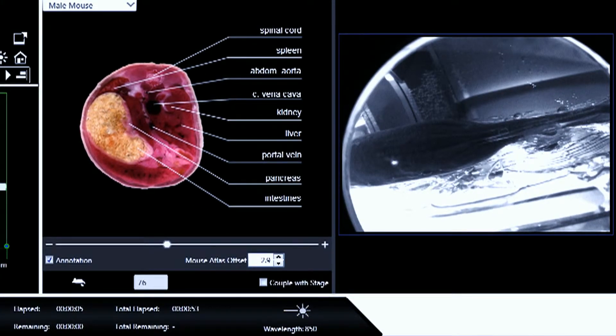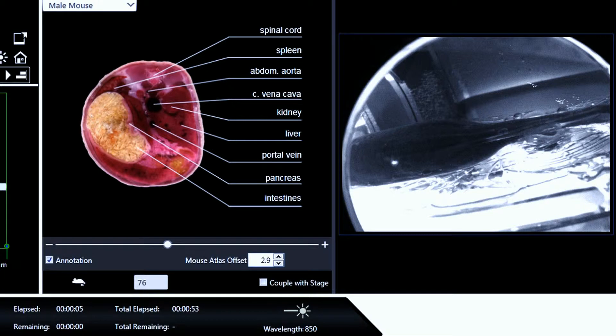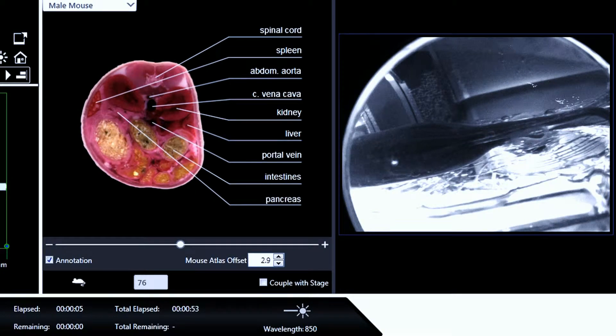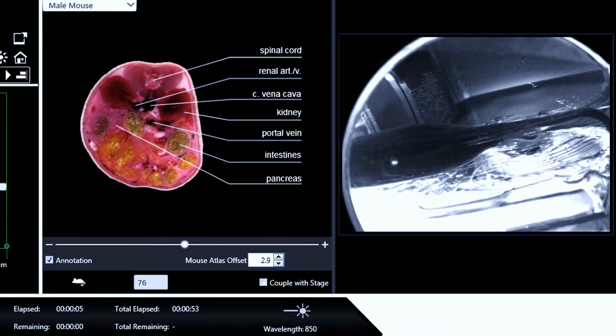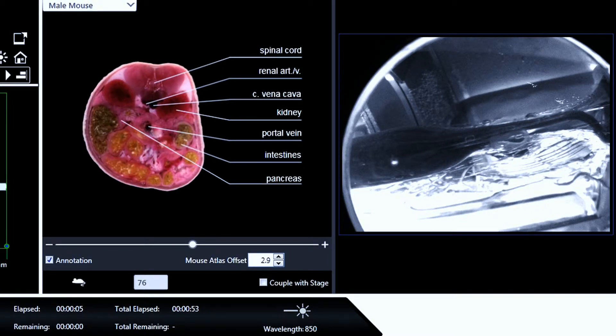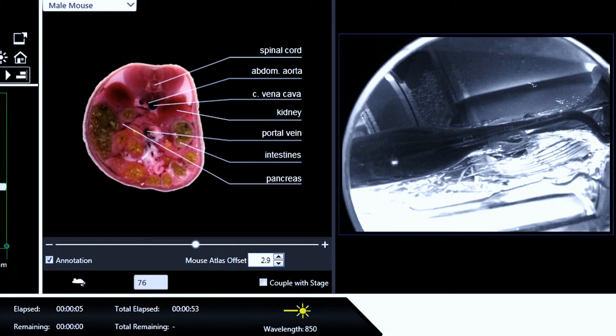During image acquisition, an in-chamber CCD camera allows for visual control of the animal. A mouse atlas featuring more than 100 annotated sections of male and female mouse anatomy serves as reference and is synchronized with the movement of the translational stage.